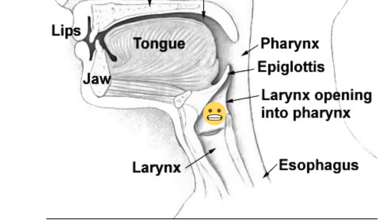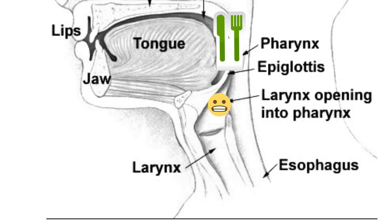The epiglottis is a flap of connective tissue that covers over the larynx during breathing. It stands open when you breathe, which allows air in, but when you swallow or eat, it closes to prevent choking on food.